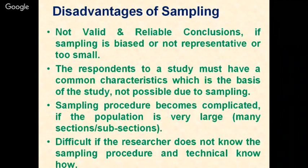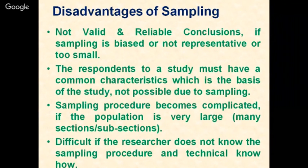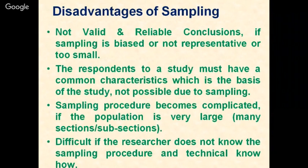Sampling procedure becomes very complicated when the population is very large. For example, studying the attitude of technical teachers can be broken down into subsections based on gender, qualification — postgraduate, graduate, PhD holders — years of teaching experience, and subjects being taught. You have to take a representative sample from each stratum. It is difficult if the researcher doesn't know the sampling procedure, and as a teacher you need to know the steps involved in drawing a sample using a particular sampling technique.